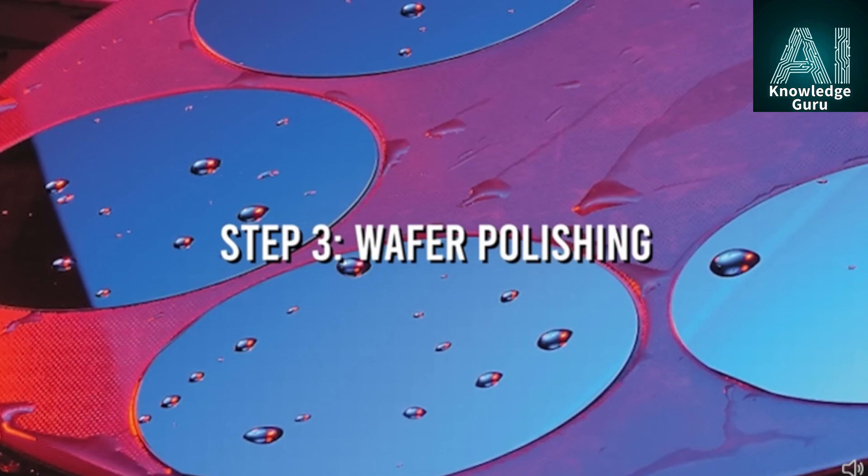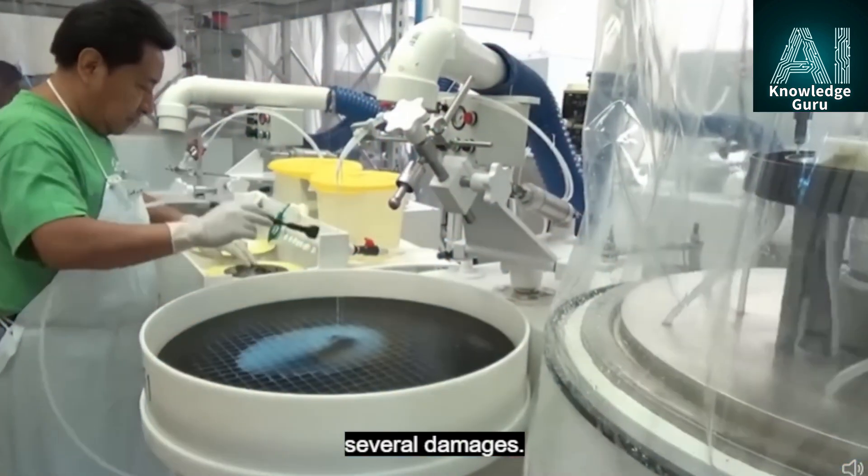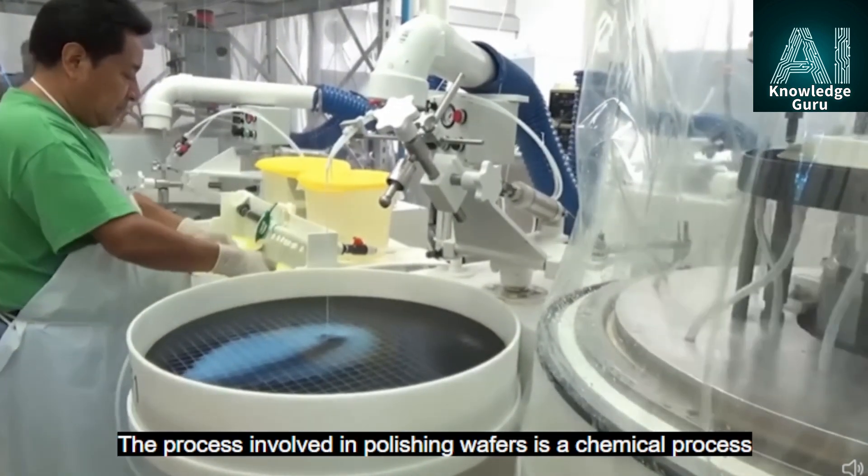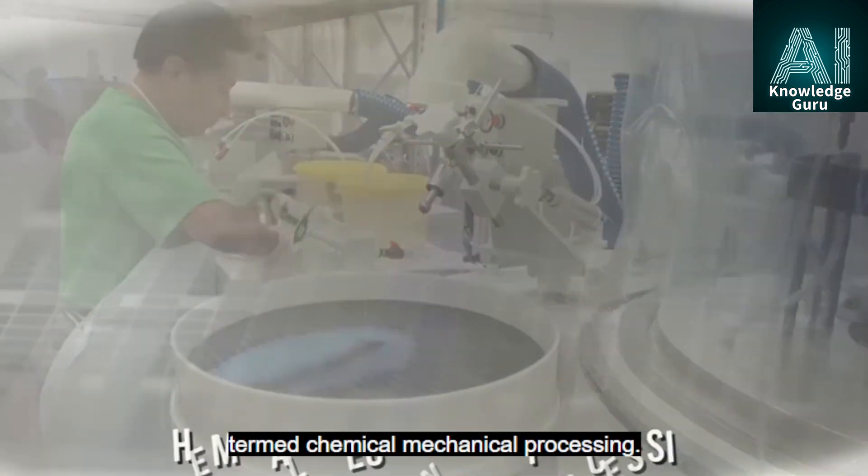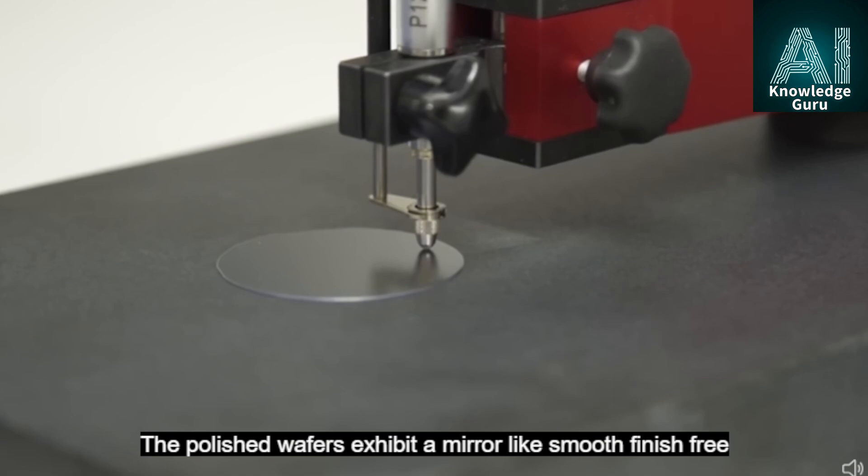Step 3: Wafer Polishing. The wafers produced have uneven surfaces which can lead to several damages. The polishing of wafers thus becomes important. The process involved in polishing wafers is a chemical process termed chemical-mechanical processing. The polished wafers exhibit a mirror-like smooth finish, free of any type of unevenness.